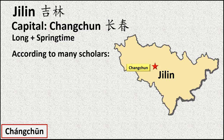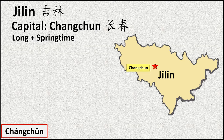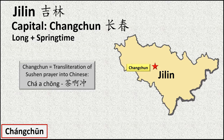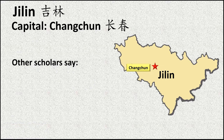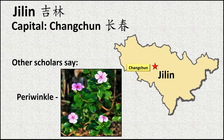According to many scholars, the name Changchun, like the provincial name Jilin, is the product of transliteration of words from another language. The origin of Changchun goes even farther back in time, to the language of a pre-Manchu group known as the Sushen. They inhabited the area almost 7,000 years ago. The summary of a prayer recited when making sacrifices to the sky was transliterated into Chinese as Cha'a Chong, which over the centuries evolved into Changchun. Other scholars disagree and say the name is simply derived from the Chinese word for a locally common plant, the periwinkle.